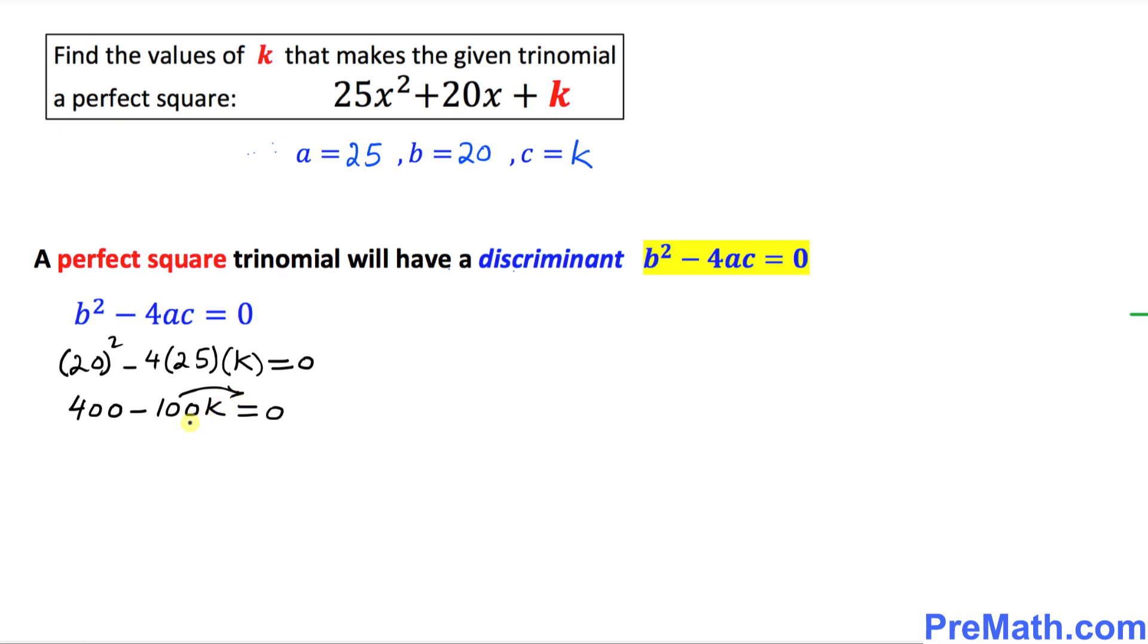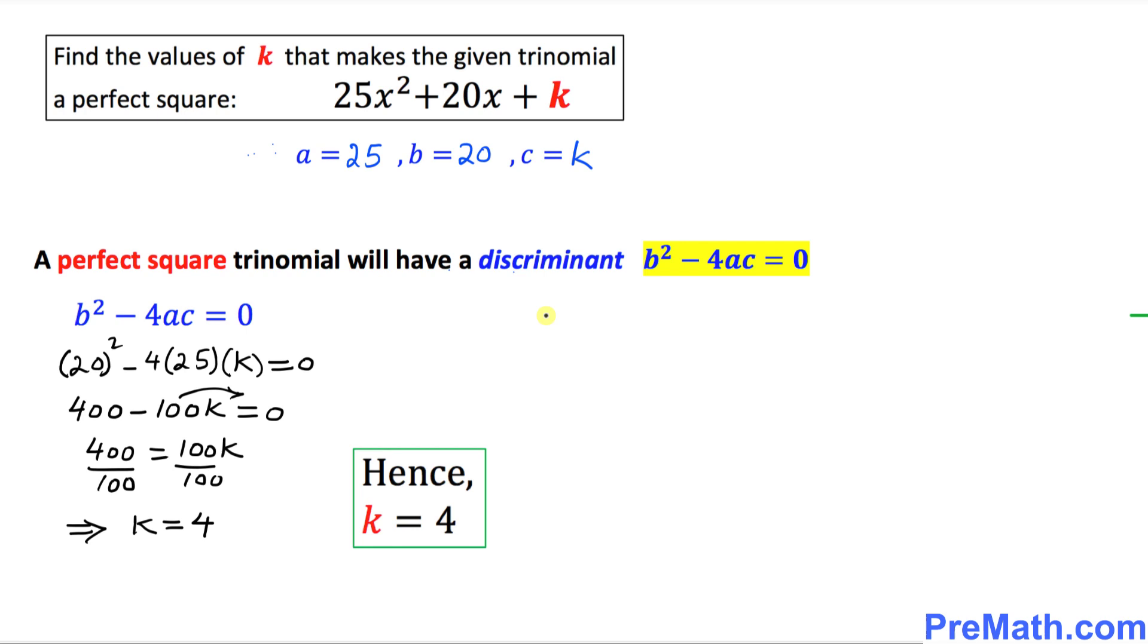Let's move this negative 100k on the other side. So we got 400 equals 100k. So that means our k value turns out to be simply 4. Thus our k value turns out to be 4, and that is our answer.